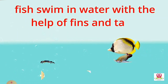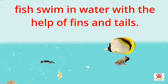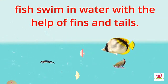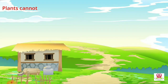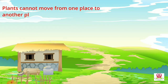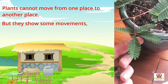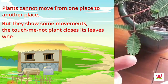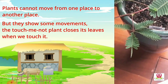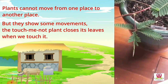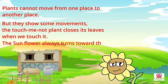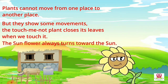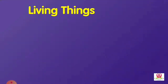Fish swim in the water with the help of their fins and tail — you can see how the fish swims. Plants cannot move from one place to another, but they show some movements. The touch-me-not plant closes its leaf when we touch it. The sunflower also turns towards the sun when the sun is shining.